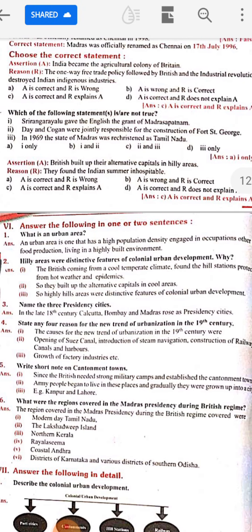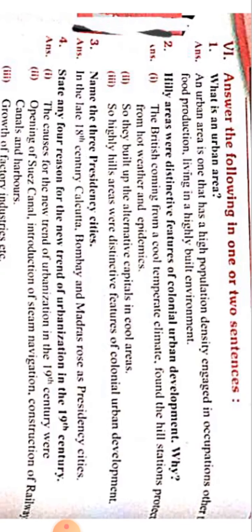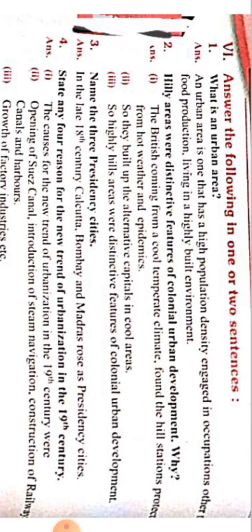Second question: Why were hilly areas distinctive features of colonial urban development? Hilly areas means hill stations — malai bangani areas. The answer is: the British came from a cool temperate climate. In England there was a cool climate, so the British found that hill stations could protect them from the hot weather and epidemics.